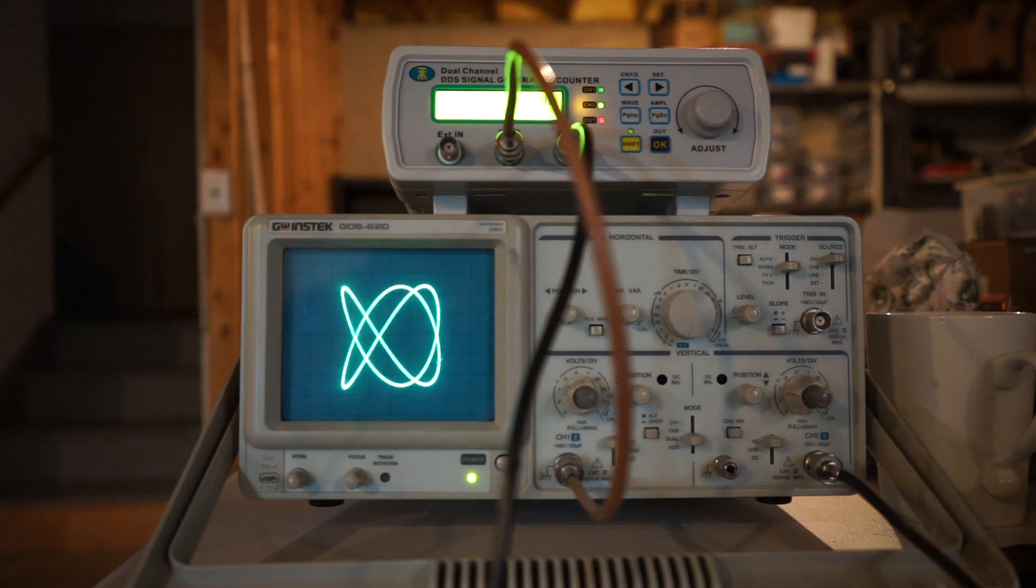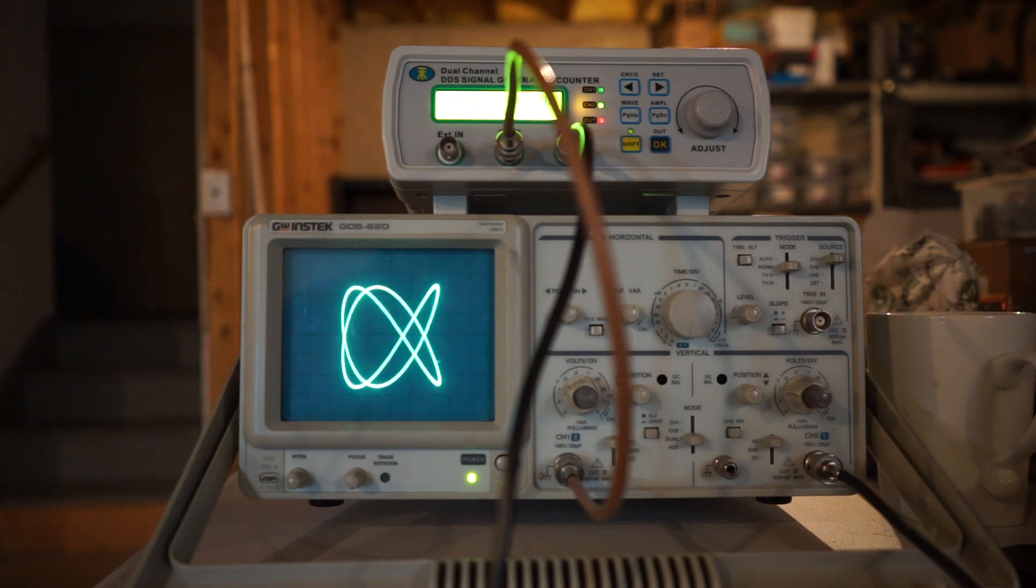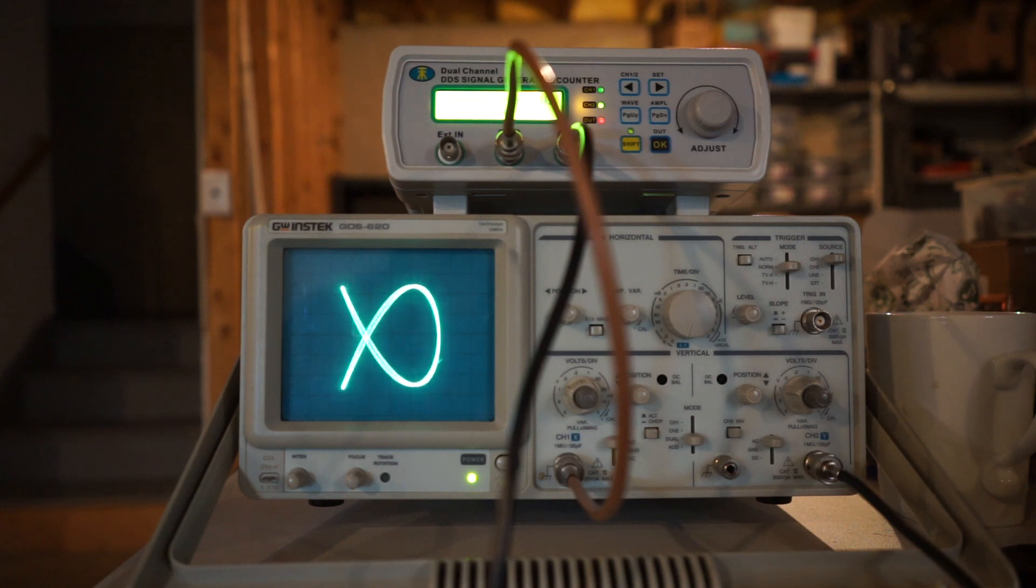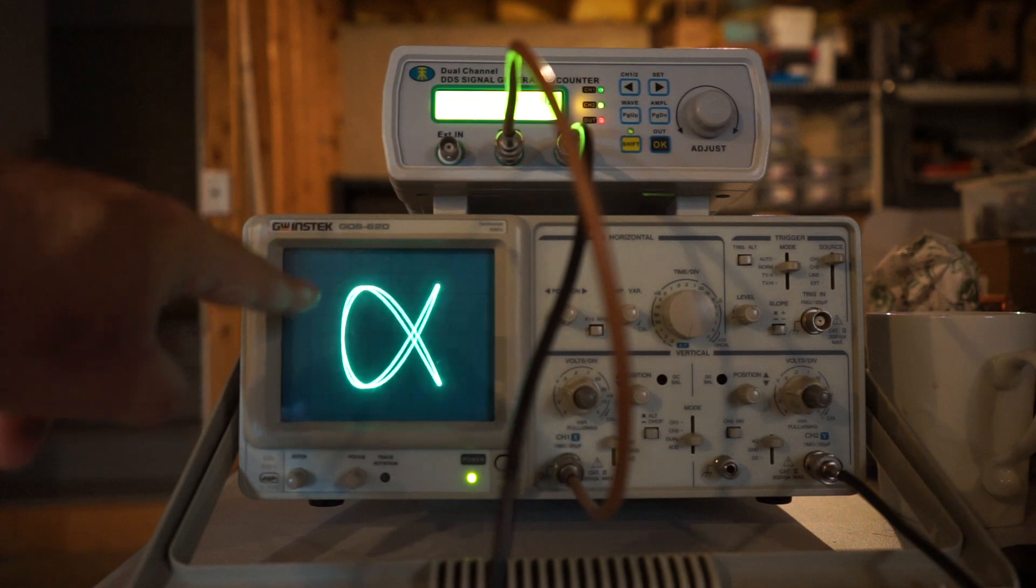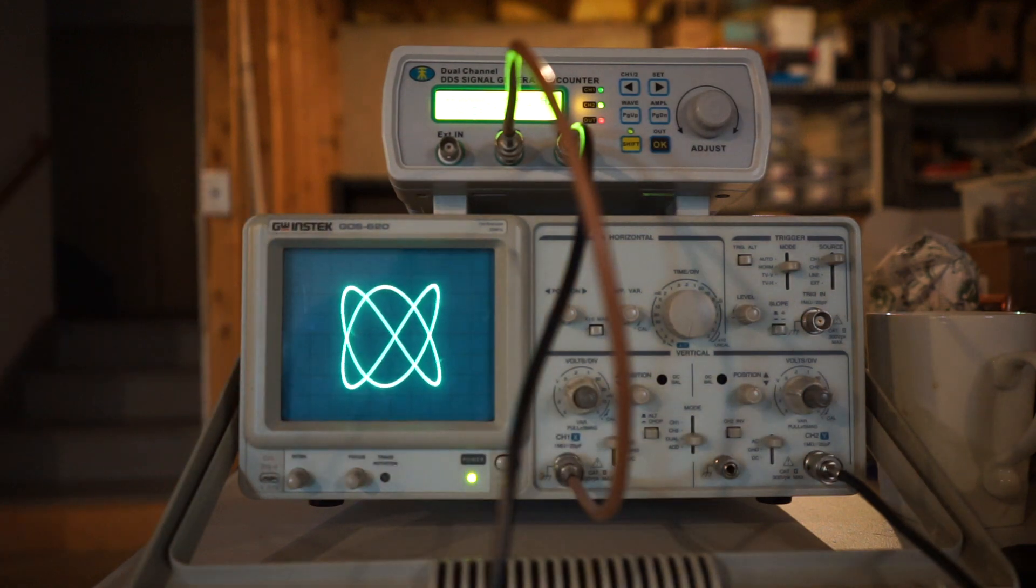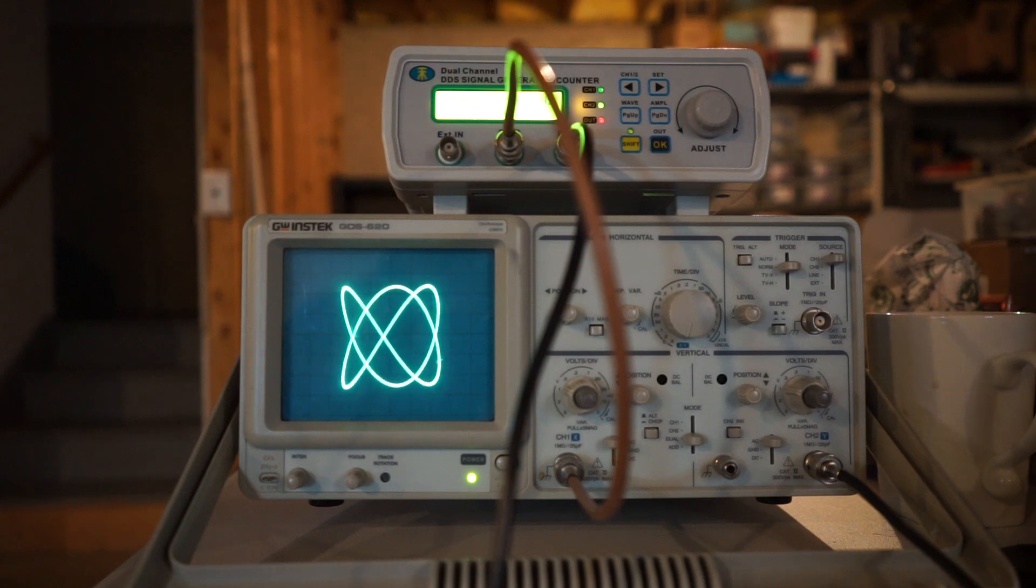We used to use this to calculate frequencies, or engineers did. I didn't personally, other than play with it. But years ago, before frequency counters, engineers would use these. They would have one known frequency, and by counting the number of bumps in the top and the bottom, they could determine the ratio between a known and an unknown frequency and come up with a calculation of what that frequency would be.